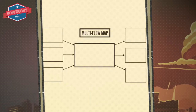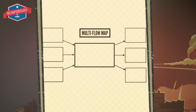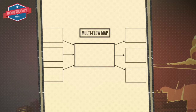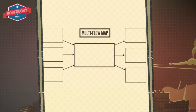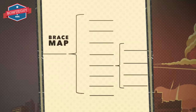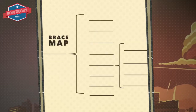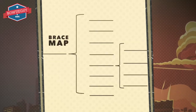A multi-flow map is used to show cause and effect. The causes go on the left side, then the topic goes in the middle, and on the right side come the effects. A brace map is best used when describing whole to part.